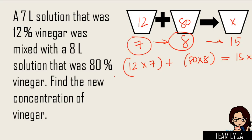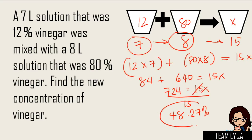Okay? So, 12 times 7 muna, 12 times 7 is 84 plus 80 times 8. So, we have 640 is equal to 15x. So, 84 plus 640 is 724 is equal to 15x. Divide both sides by 15 para makancel to. Cancel siya. So, 724 divided by 15 is about 48%. So, 48.27%. Okay? So, that is the answer.